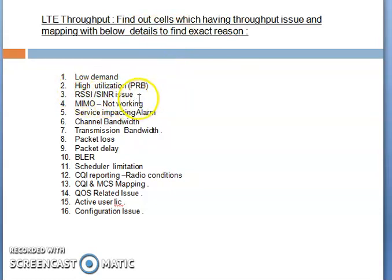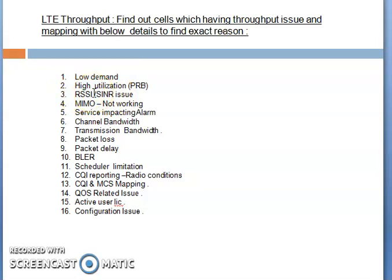The third factor is RSSI and SINR issues. High RSSI and SINR issues may be due to interference. You can check external and internal interference on that particular site, and overshooting — you can optimize accordingly by changing your electrical and mechanical tilt. For the RSSI part, also check proper cabling, check if there is any service-impacting alarm like a VSWR alarm, and ensure that is properly corrected. If there is an obstruction at the site, that can also cause RSSI and SINR issues.